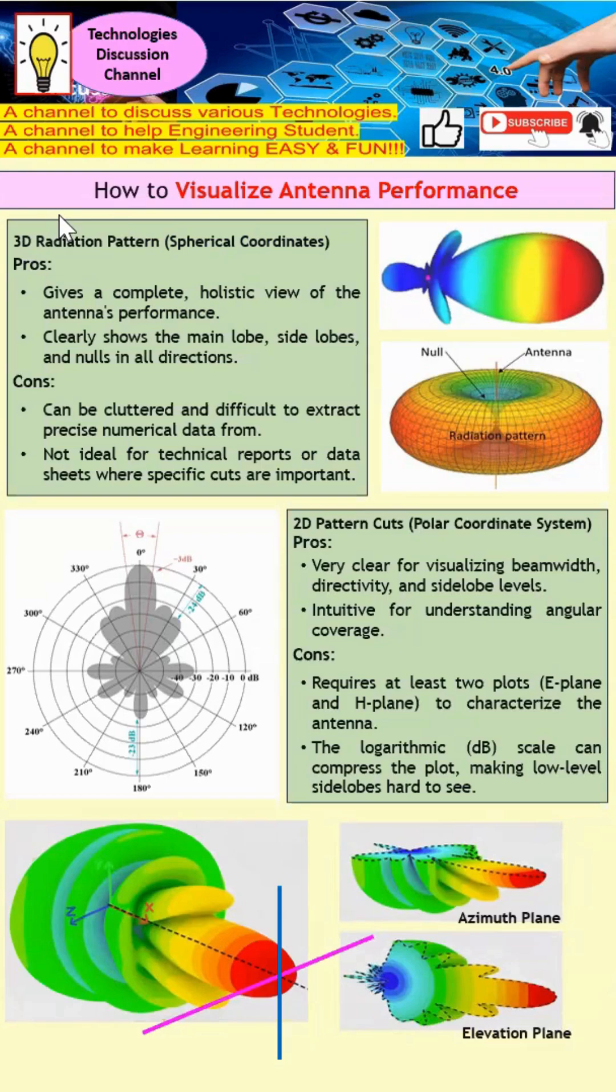The first one is the 3D radiation pattern. From this diagram, you can see whether the antenna is directional or omnidirectional. In short, 3D radiation patterns give a complete holistic view of the antenna's performance.